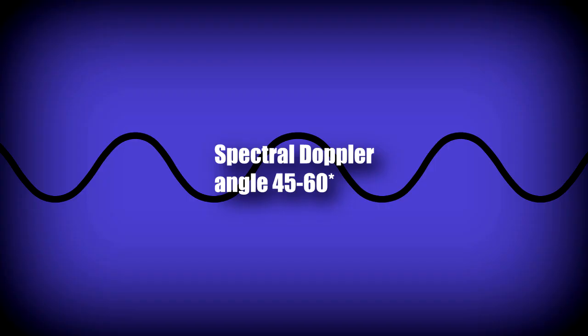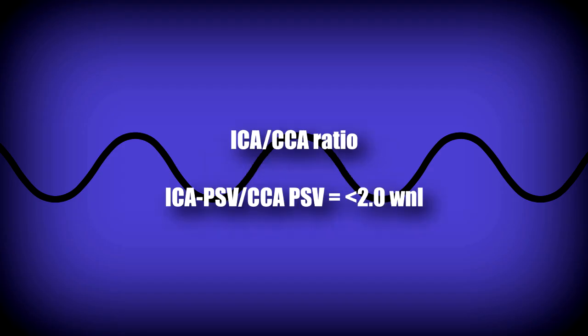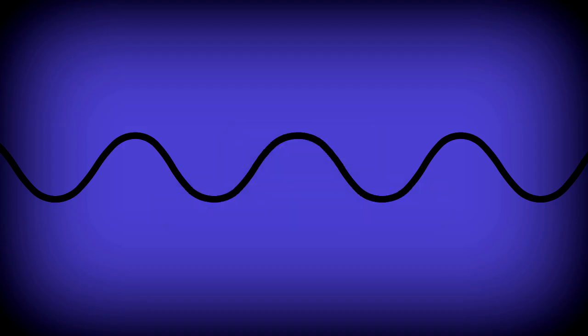Spectral Doppler angles should be 45 to 60 degrees in order to avoid overestimating velocities. The ICA-CCA ratio is important for estimating stenosis. You obtain the peak systolic velocity of the ICA and the peak systolic velocity of the CCA and divide them. An ICA-CCA ratio of less than 2.0 is considered within the normal range, representing an estimate of less than 50% stenosis, which can be described as no hemodynamically significant stenosis.